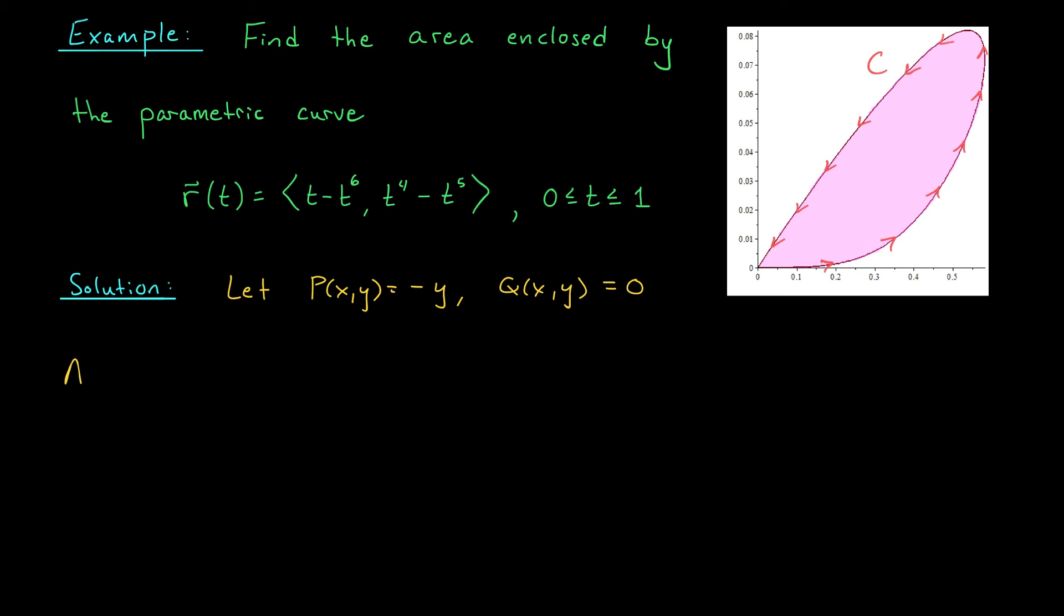So we have the area of R is the double integral over R of 1 dA, and we can write that as the double integral over R of ∂Q/∂x - ∂P/∂y dA. Now using Green's theorem, we can write this as the line integral along c of P dx + Q dy. At this point, we can sub in our P and Q. We have the integral from 0 to 1, those are the values of t that were given to us, of PQ, so that's ⟨-y, 0⟩, dot the derivative of r(t),